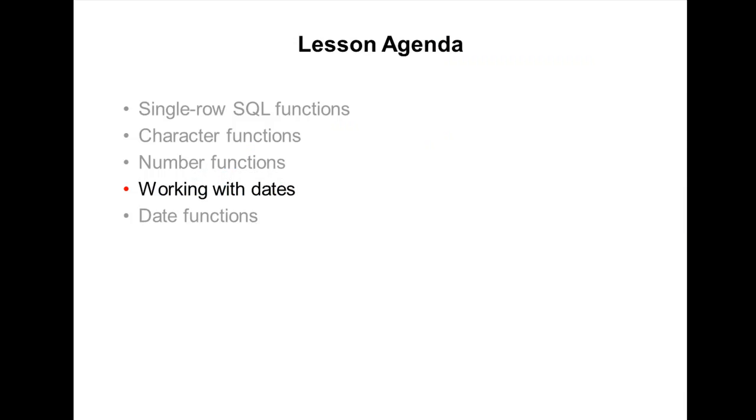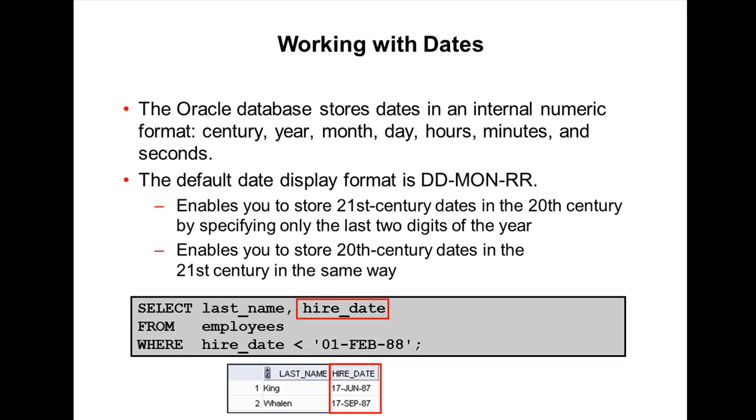Okay, now I'm going to explain date functions in Oracle. Oracle stores dates in an internal numerical format like century, year, month, day, hours, minutes, seconds. The default display and input format of any date is DD-MON-RR.